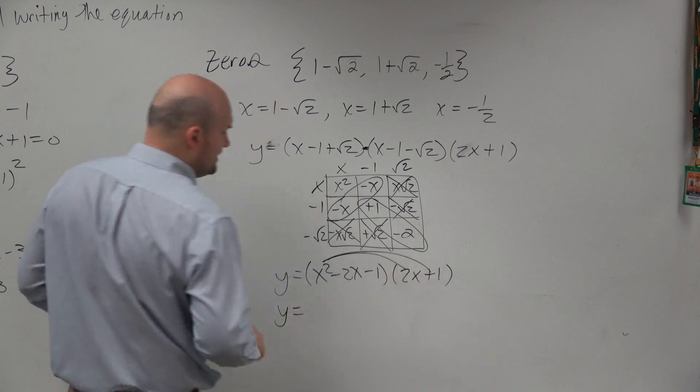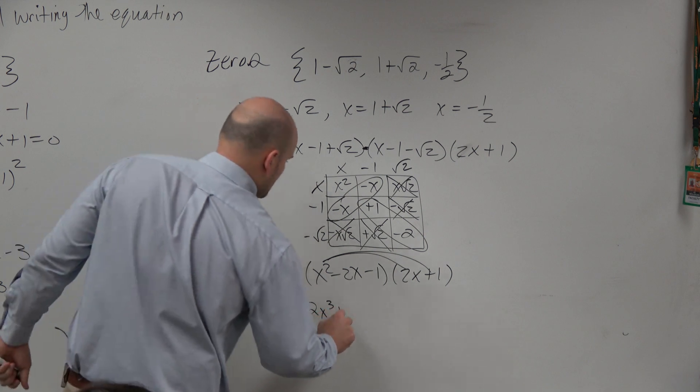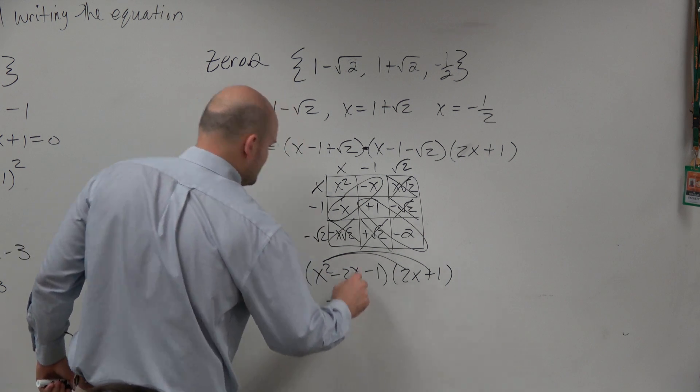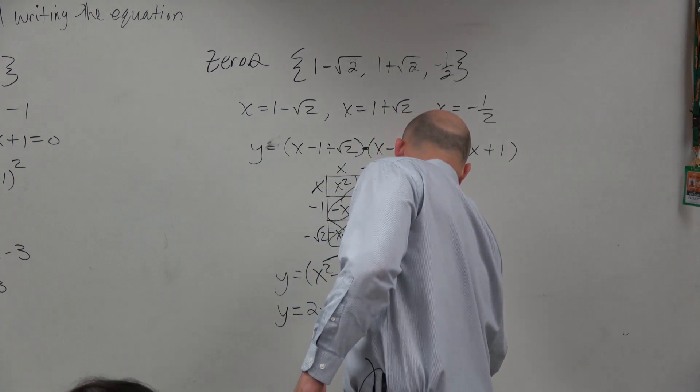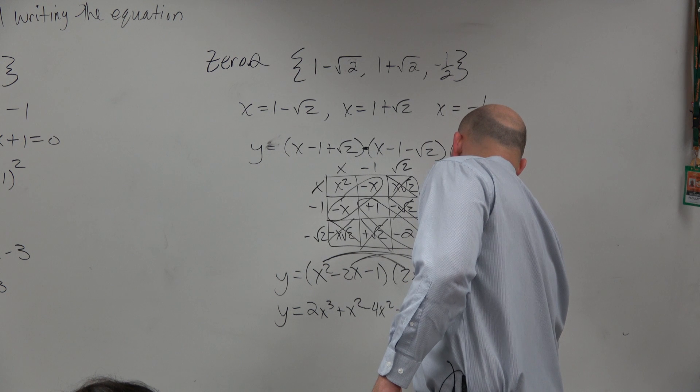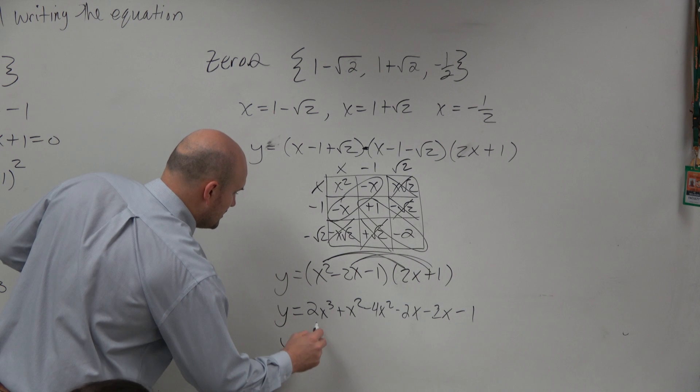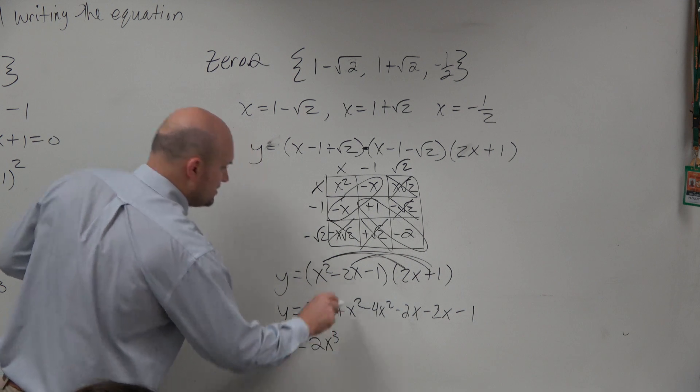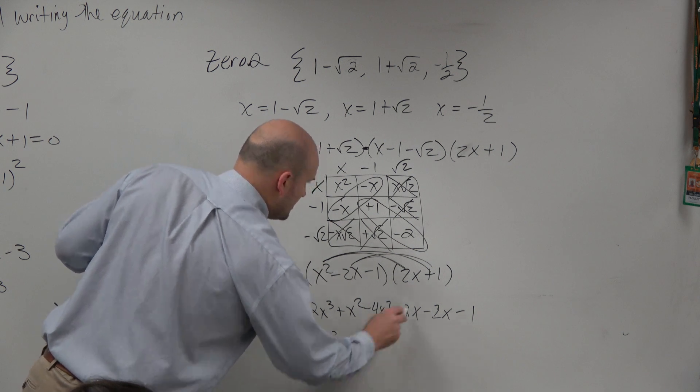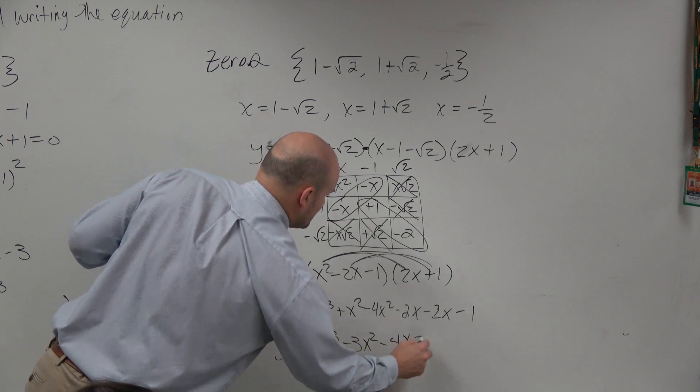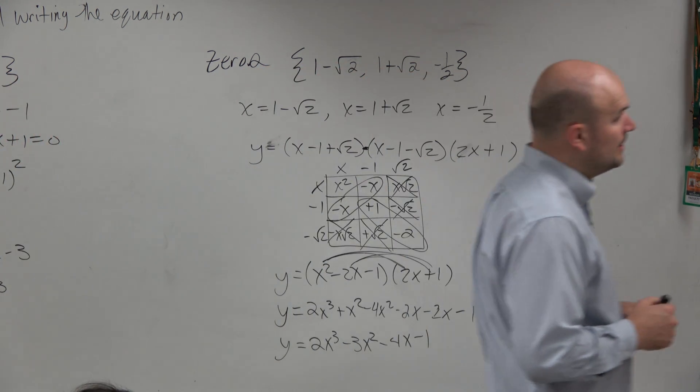So again, you're just multiplying each term times both of the second terms. So therefore I'll have 2x cubed plus x squared minus 4x squared minus 2x minus 2x minus 1. And then we have a couple of like terms here. So we have 2x cubed, let's see, x squared, x squared, so that's going to be negative 3x squared minus 4x minus 1. OK, there you go.